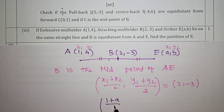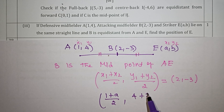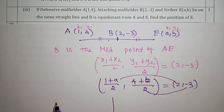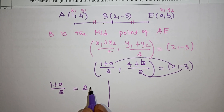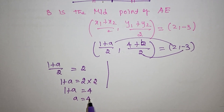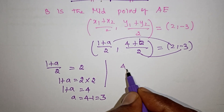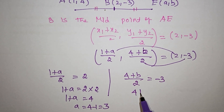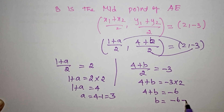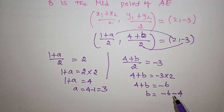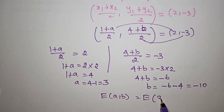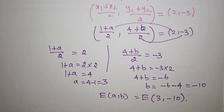Using the midpoint formula with A = (1, 4) and E = (1, 2) as the endpoints, and B = (a, b) as midpoint: For x-coordinate: (1+a)/2 = 2, so 1+a = 4, giving a = 3. For y-coordinate: (4+b)/2 = −3, so 4+b = −6, giving b = −10. Therefore the coordinates of B are (3, −10).